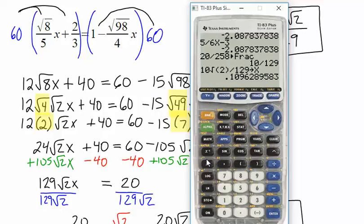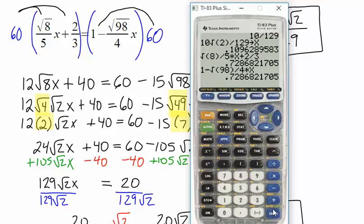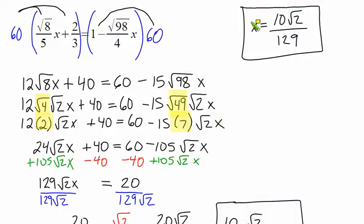Then we're going to type the left-hand side of this equation. Square root of 8, close your parentheses or get out of the square root, divided by 5 times x plus 2 thirds. Hit enter. Hopefully, the right-hand side matches. So 1 minus the square root of 98, close your parentheses, divided by 4 times x. Enter. Look at that. They're exactly the same. We're 100% sure that our answer is correct, and we can be confident in knowing that we're right.